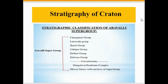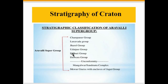Regarding the stratigraphy of the craton, the stratigraphic classification of the Aravalli Supergroup starts from the Banded Gneissic Complex, also known as the Mewar Gneiss or Mangalwar Complex, or the Sandmata Complex at some places. Above that are the Delwara Group, the Bhilwara Group, Udaipur, Jharol, Lunawala, and Champaner Groups.